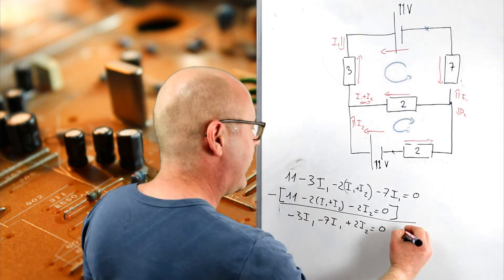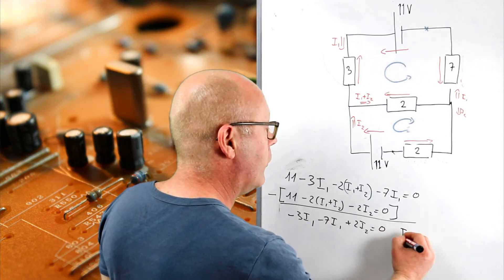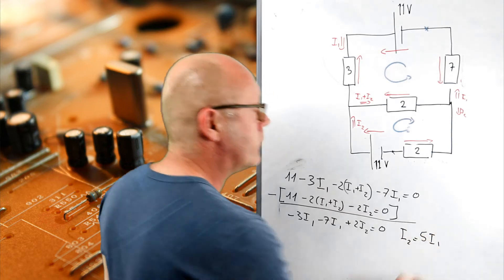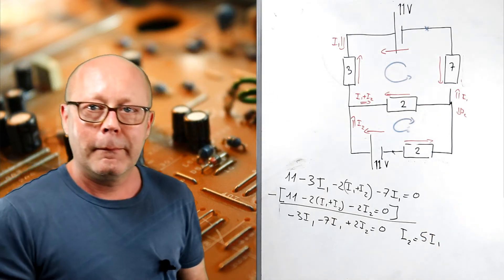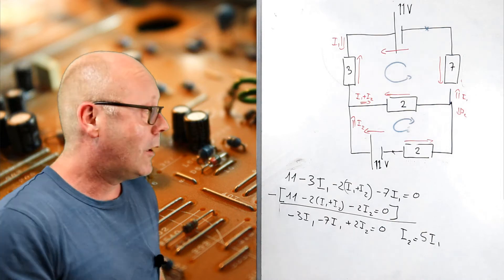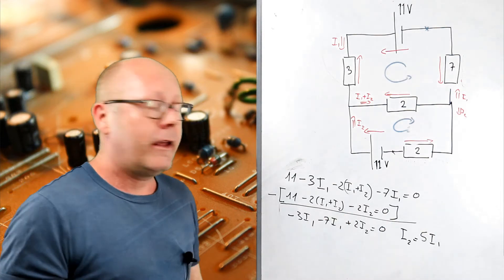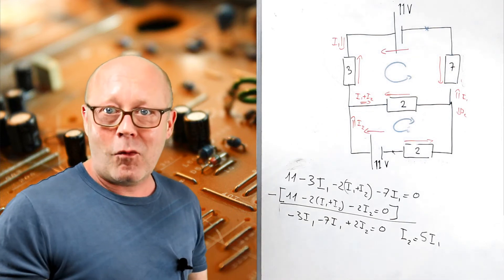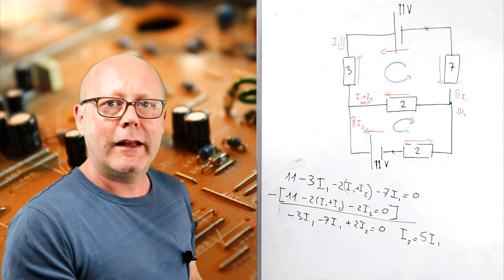So, basically, if I solve this, I find something very simple. I find I2 equals 5 I1. Cool. Because now, I can just take any of the equations and plug this in. And I will get one equation with one unknown. Let's do that.